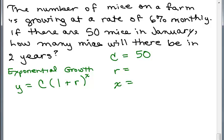R is the rate. The rate of growth is 6%, so I'm going to write that as .06. You want to write that as a decimal.